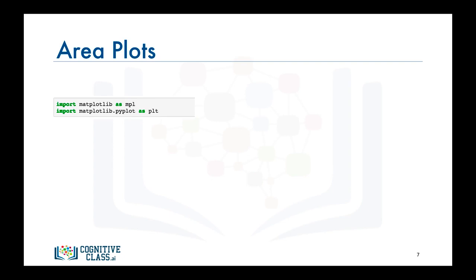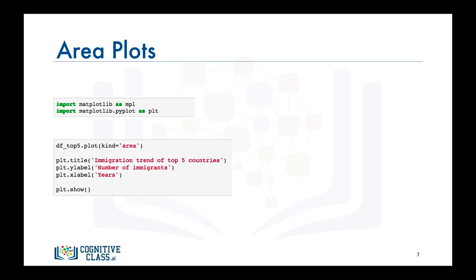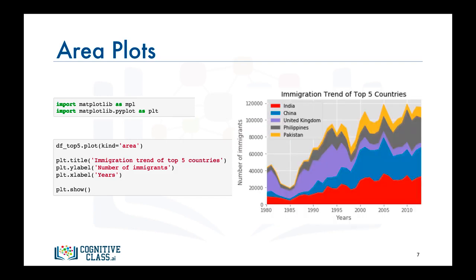We call the plot function on the data frame df_top5 and set kind equals area to generate an area plot. Then to complete the figure, we give it a title and label its axes. Finally, we call the show function to display the figure, using the inline backend. And there you have it — an area plot that depicts the immigration trend of the five countries with the highest immigration to Canada from 1980 to 2013.